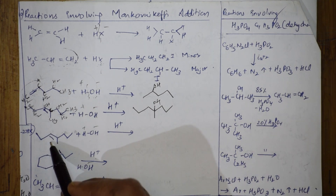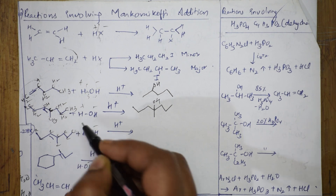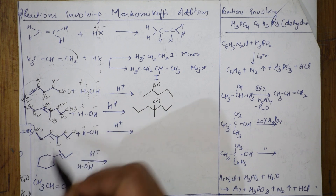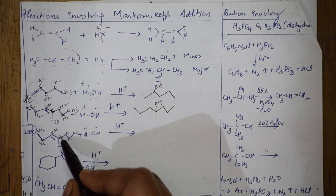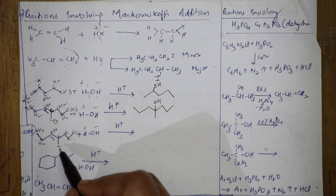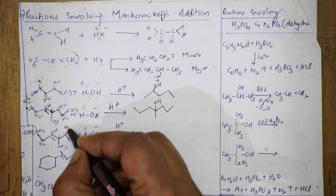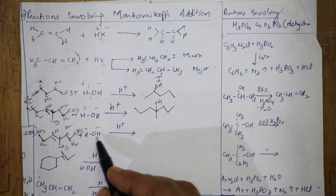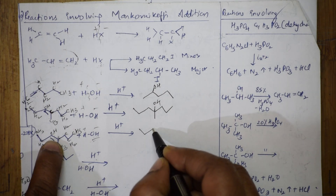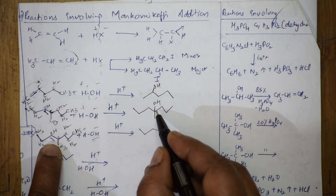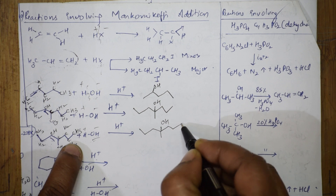Again, this is an alkene and we add the negative addendum. Write the number of carbon atoms: one through eight. Filling hydrogens — first carbon CH₃, second CH₂, third has one H, fourth has four bonds so no hydrogens, fifth has one H and three bonds, sixth CH₂, seventh CH₂, eighth CH₃. The negative addendum goes to the carbon which has no hydrogens. Copy the structure carefully — never write the double bond again — and OH joins at that carbon.